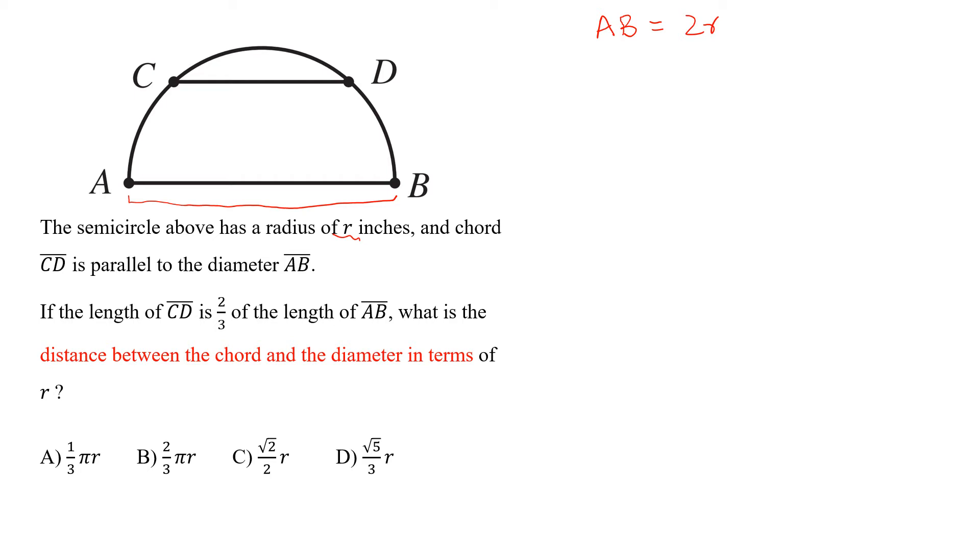And chord CD is parallel to the diameter AB. If the length CD is 2/3 of the length AB, so CD is equal to 2/3 of the length AB.